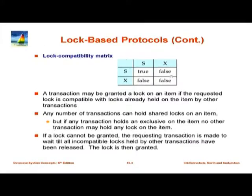Here is a lock compatibility matrix. Compatible means two transactions can have compatible locks on the same data item. S and S are compatible — two transactions can have shared locks on the same data item at the same time. All other combinations are incompatible: if one transaction has an X lock, no other transaction can get either an S lock or an X lock on the same data item. The table is symmetric — it does not matter which came first. If S lock came first and X lock came later, X has to wait. If X lock came first and then an S lock request came, the S lock request has to wait.